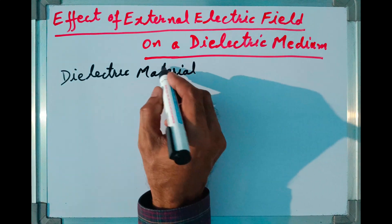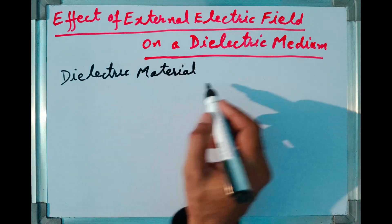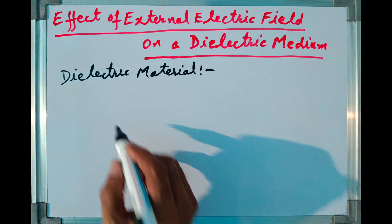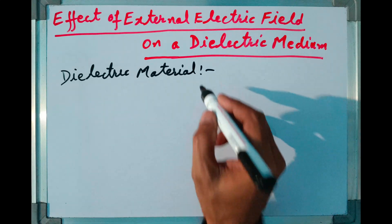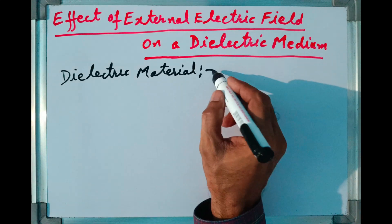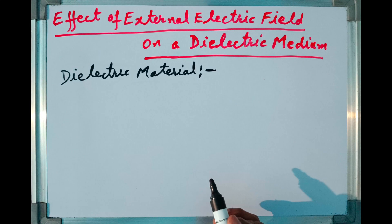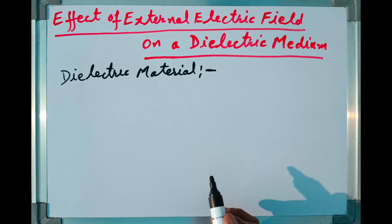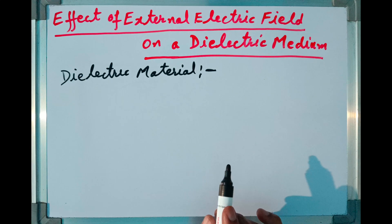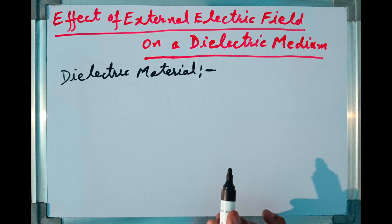As we know, in case of a good conductor material, current flows when external electric field is applied. But this does not happen in case of dielectric material. In case of dielectric material, when a very strong electric field is applied, it shows some electrostatic effects.